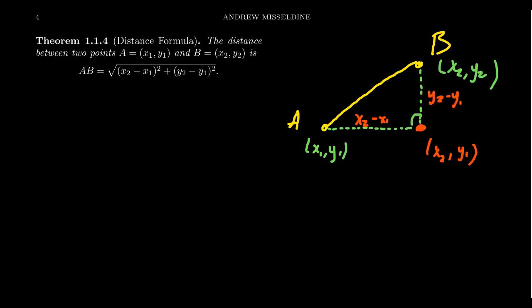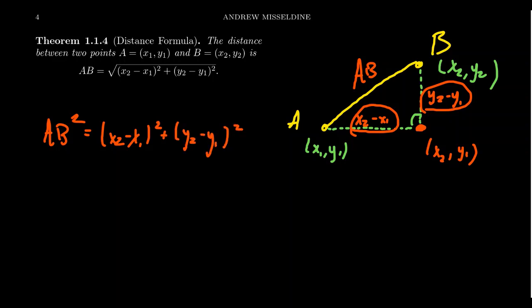And so now we see we have the measure of one side of the right triangle, we have the measure of another side of the right triangle, and we want to know the measure of AB right here. So by the Pythagorean equation, we get that the hypotenuse squared is going to equal the sum of the leg squares. So we're going to take x2 minus x1 squared plus y2 minus y1 squared. Then if you want to solve for AB, you're going to take the positive square root of both sides. And that leads to the distance formula right here.